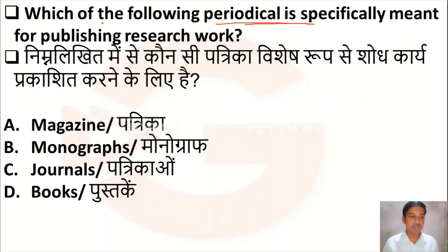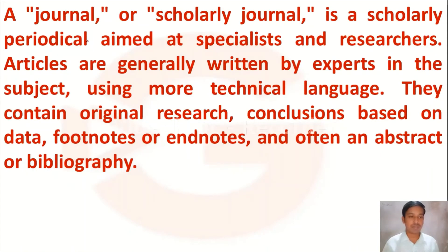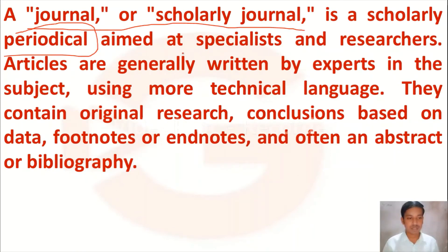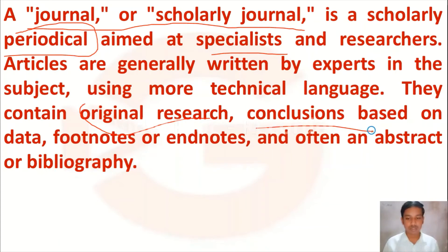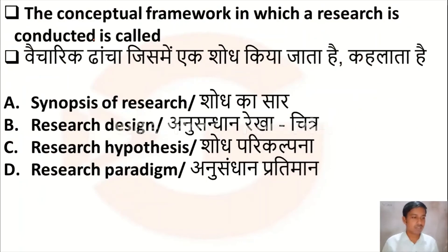The next question is: which of the following periodicals is specifically meant for publishing research work? Option A: manual/magazine, Option B: monographs, Option C: journals, Option D: books. Books are not the right answer, magazine is not only for research papers, monographs are also not the right answer. Option C — journal — is the correct answer. A journal is a scholarly periodical used by specialists and researchers, containing original research using technical language.